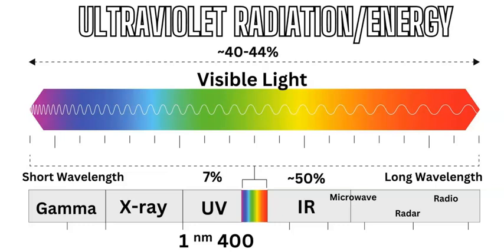In terms of the percentage of energy in this package: about 7% is ultraviolet, about half is infrared or thermal heat energy, and the rest — between 40 and 44% — is visible light. We receive very small amounts of gamma and X-ray if any, and various amounts of microwave, radio, and radar on the extremes. The majority of received solar energy that reaches the surface comes from a combination of visible light, infrared, and ultraviolet.